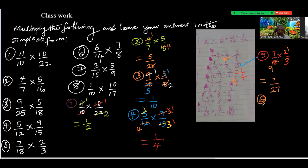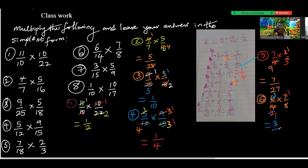Number six: 6 over 14 times 7 over 8. 7 can divide itself — 7 into 7 is 1, 7 into 14 is 2. Then 2 is common to 6 and 8 — 2 into 6 is 3, 2 into 8 is 4, wait — 2 into 2 is 1. So at the top: 3 times 1 is 3. At the bottom: we get 3 over 8.